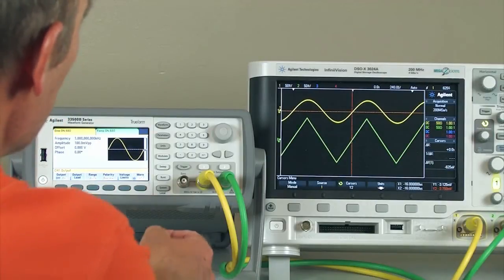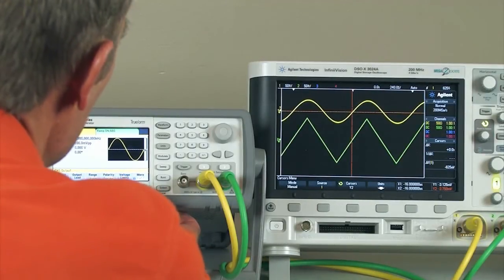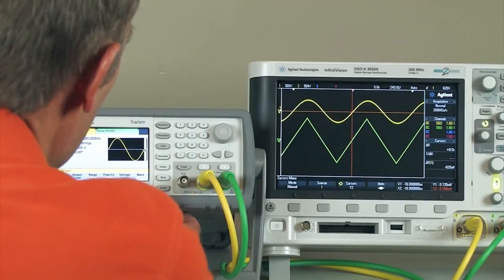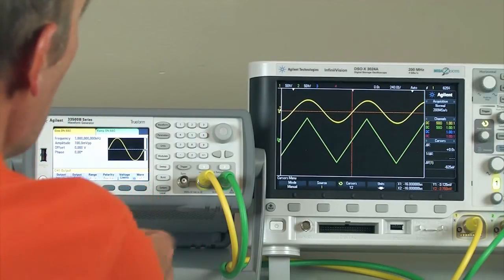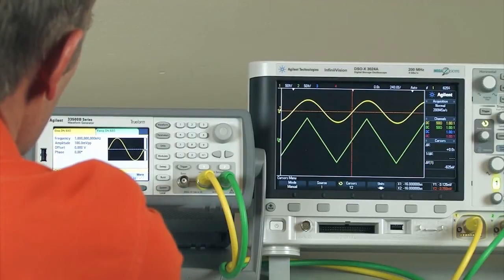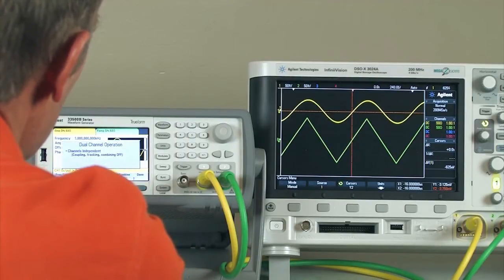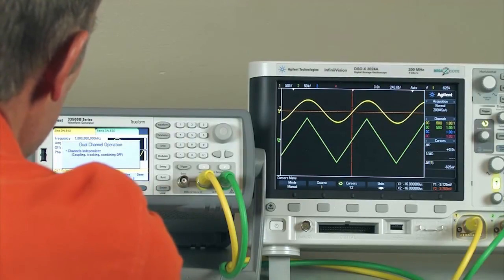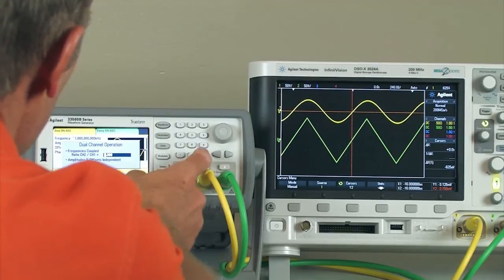Okay, method number two. Let's say we have two clock signals and they're a ratio of three to one. What we can do is use channel coupling to set that up. So I'm going to turn on frequency coupling and then set the ratio of three to one.